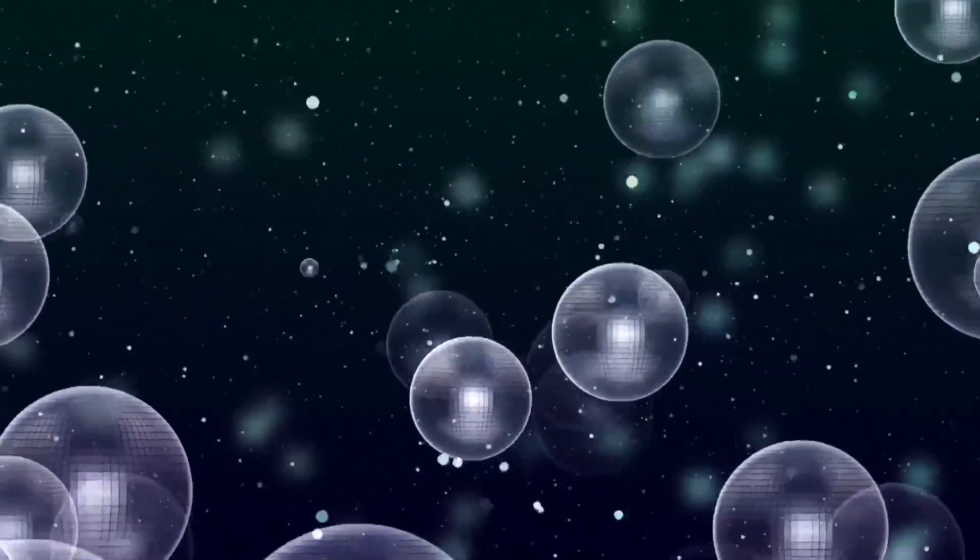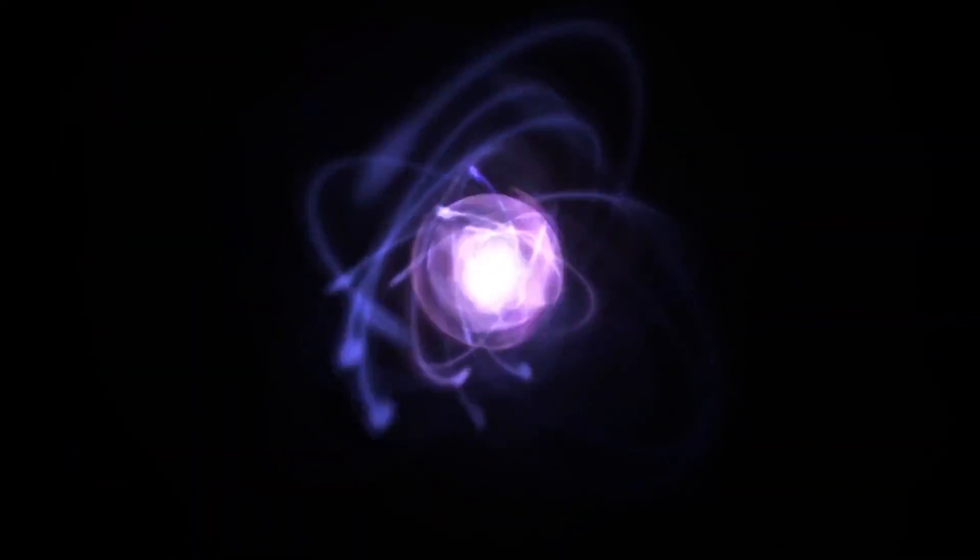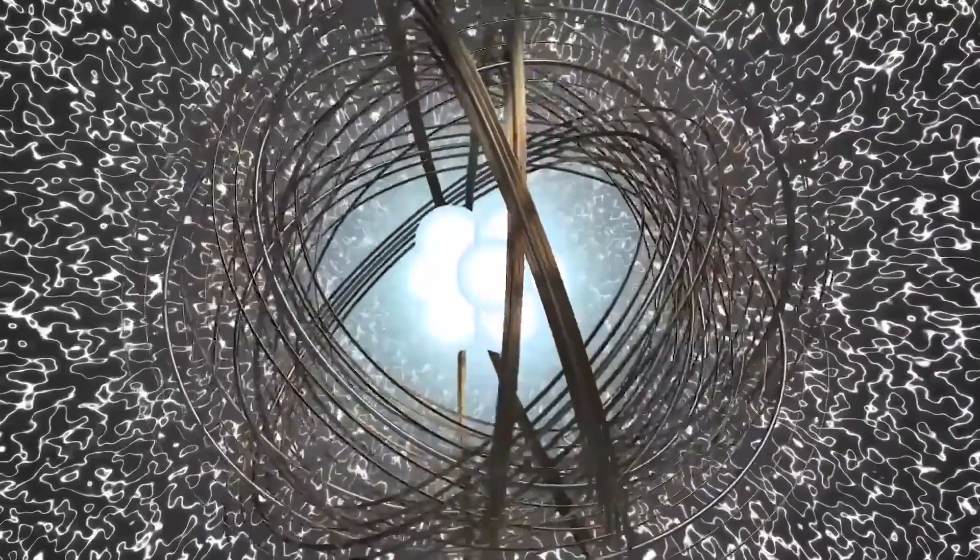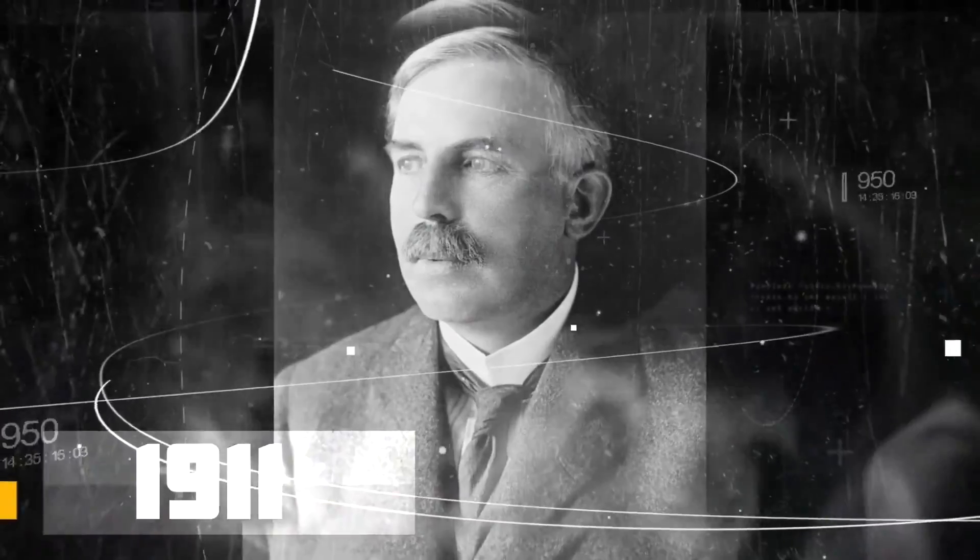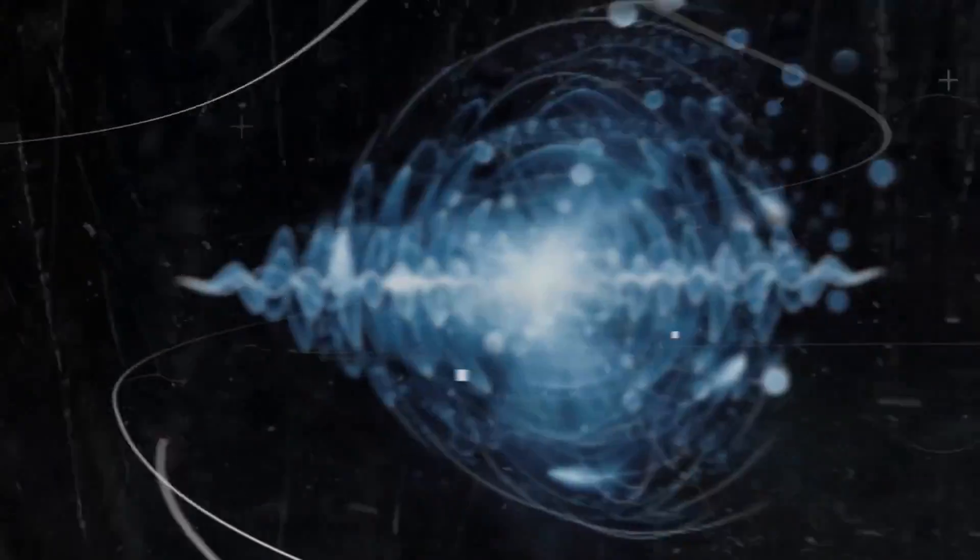From your school chemistry course you probably remember that an atom consists of a nucleus, which is formed from protons, neutrons, and electrons moving around it. This model was proposed by Ernest Rutherford in 1911 and was called the planetary model of the atom.